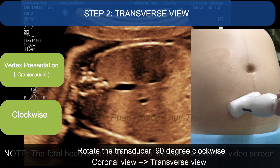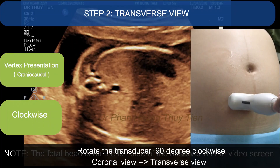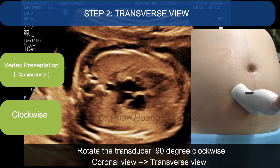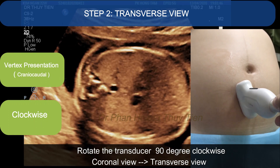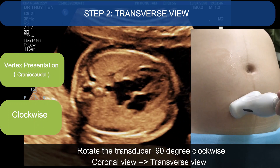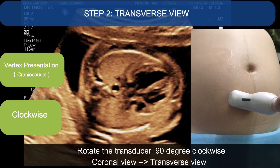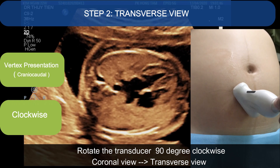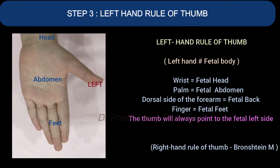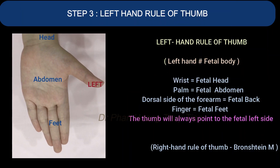Step 2. Since it's a vertex presentation, you need to rotate the transducer 90 degrees clockwise to obtain the transverse view. Step 3.